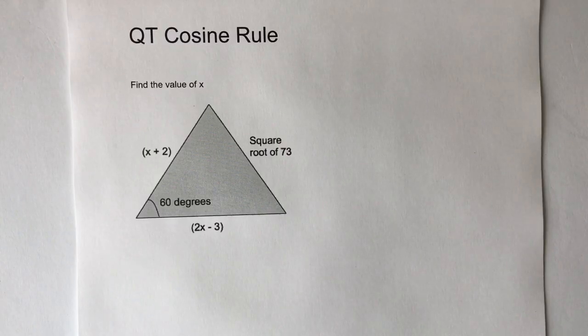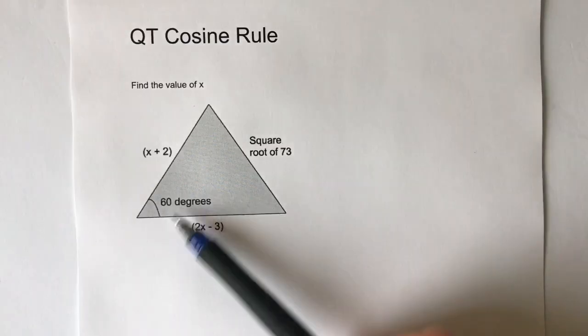Hi, in this video we're looking at the kind of question that might appear towards the end of a non-calculator paper. The reason it's non-calculator is because we've got to recognize it's going to be the cosine rule that we're going to apply, and also we've got to know the cosine of 60 degrees.